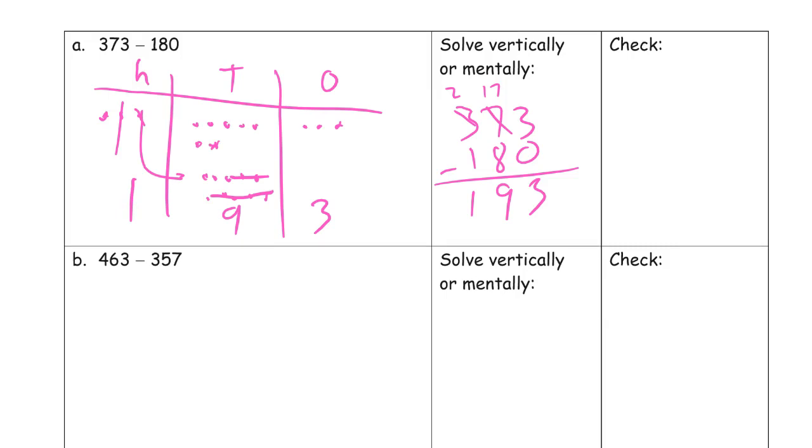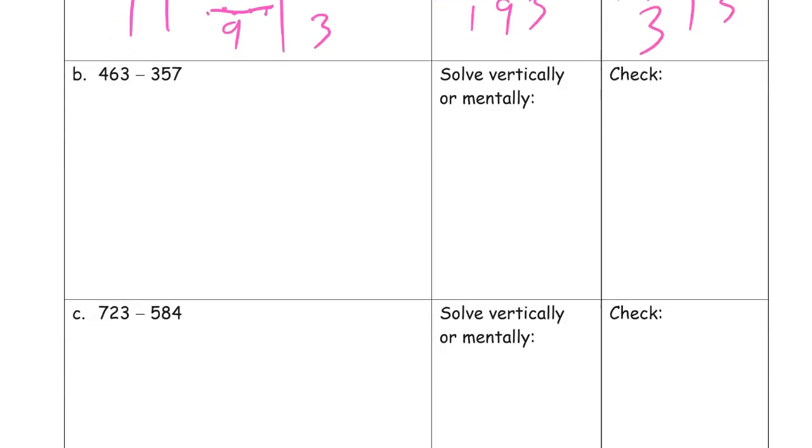And we'll check this. You should be able to add the 180, our subtrahend, to the 193. Add our ones digits first, three. Eight plus nine, our tens is 17, got to compose 100. Got the 373 back again.